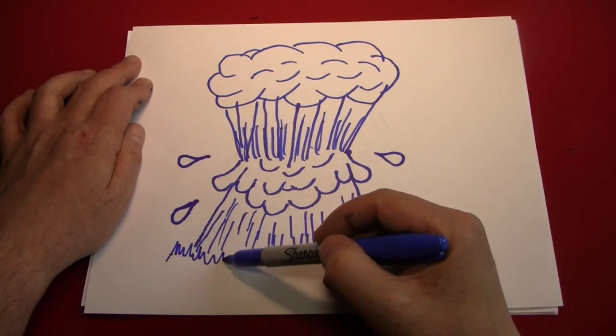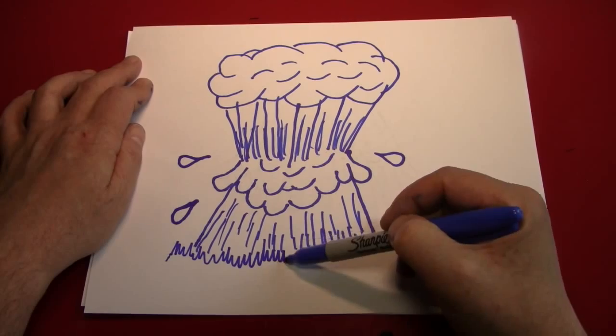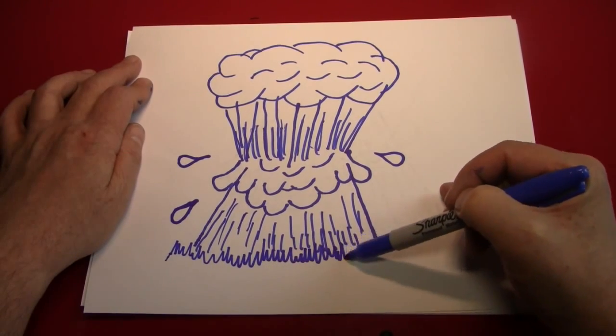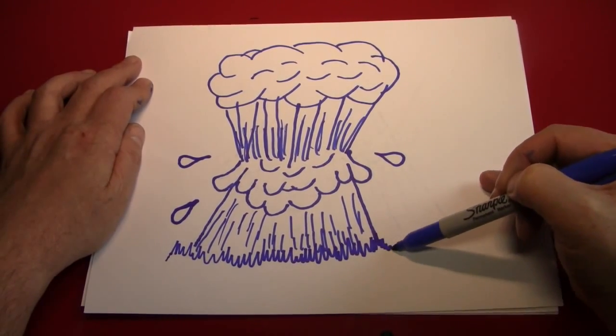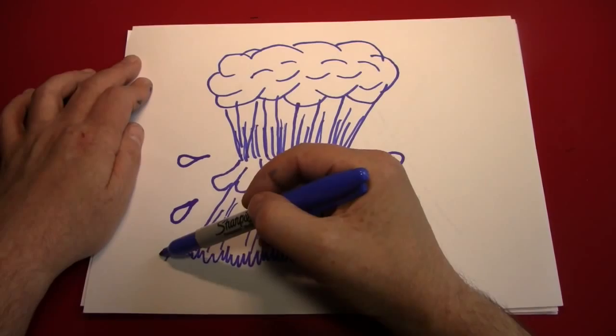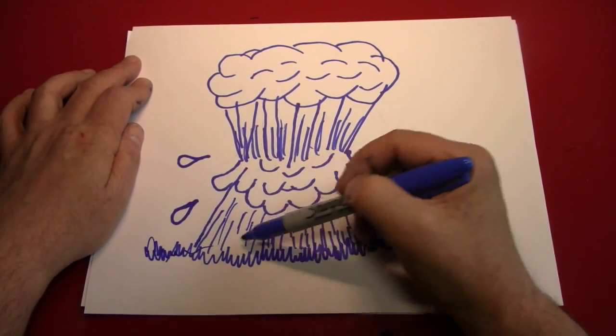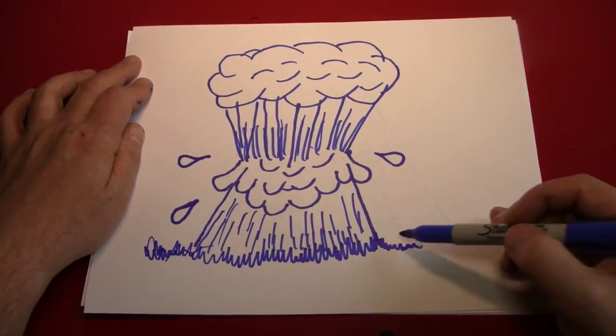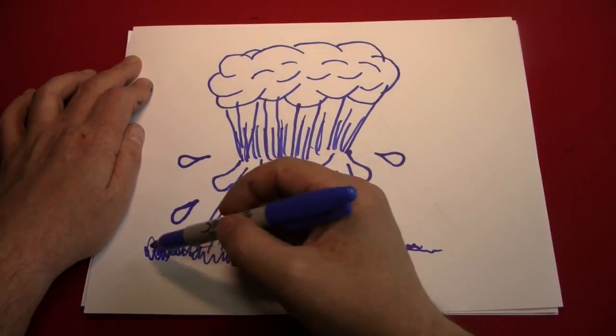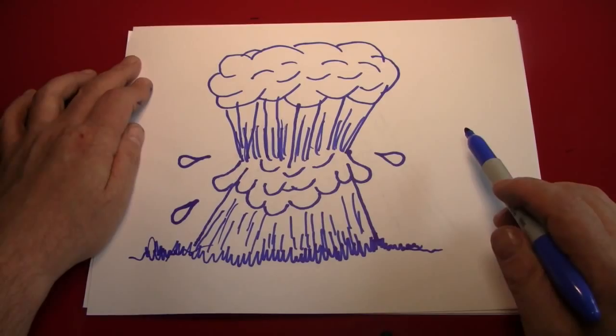Now we can just give some ground around the base of the mountain, using our old friend, the grass pattern, which is nothing but just wiggling the pen up and down as it goes across the page.